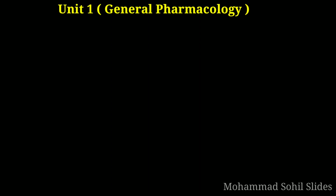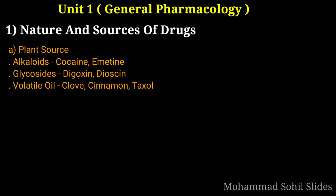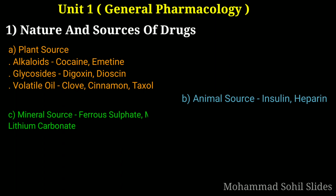First of all we will cover the sources of drugs. There are various sources from which drugs are obtained. The sources of drugs are: first, natural source; second, synthetic source; and third, semi-synthetic source. Under natural sources there are various types: first is plant source, second animal source, third mineral source, and fourth is from microorganisms.